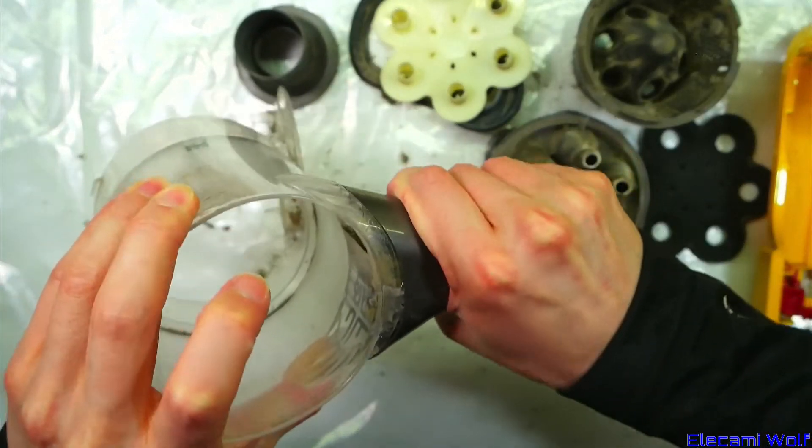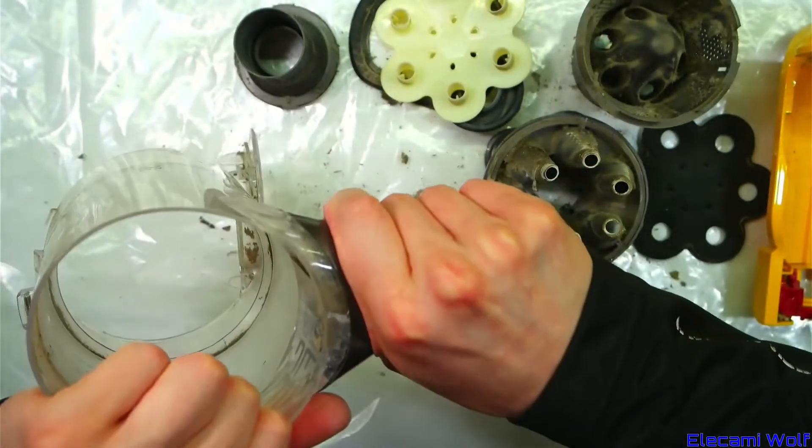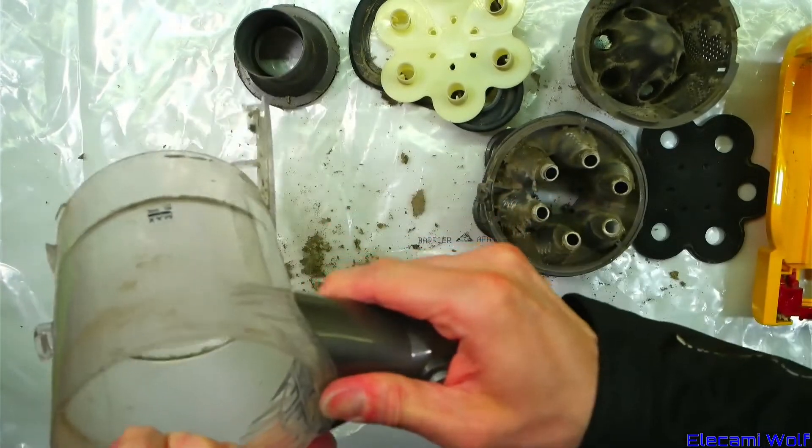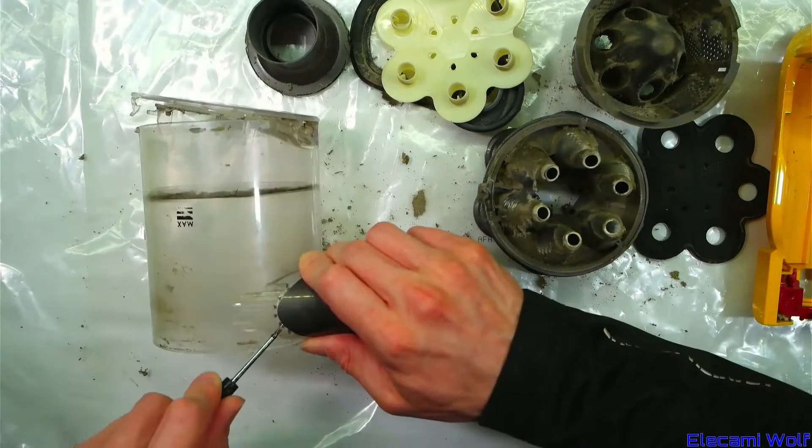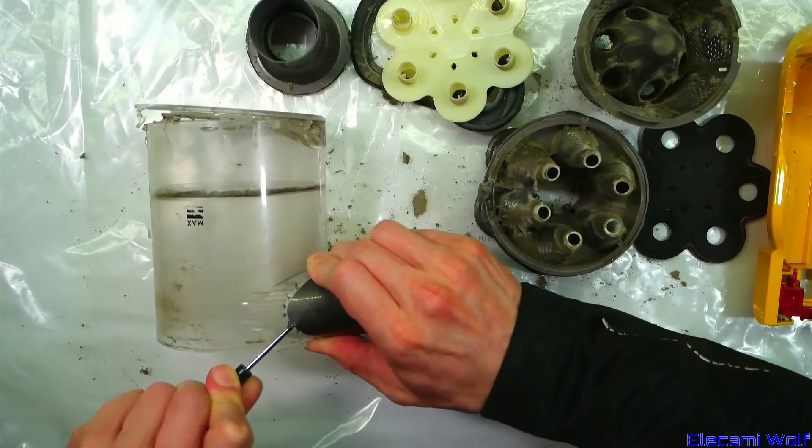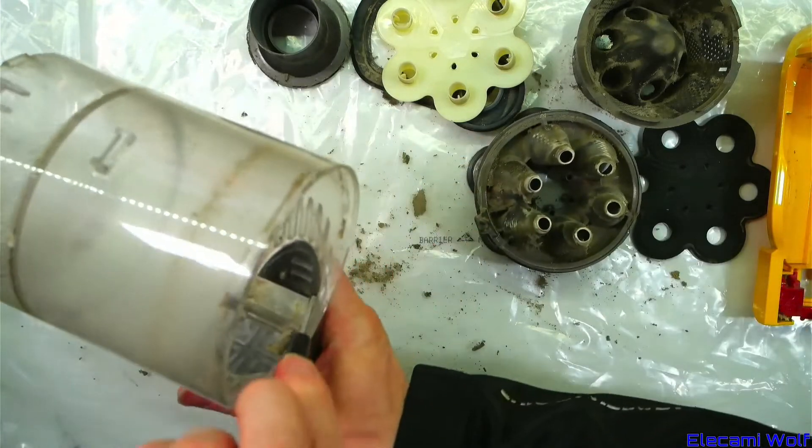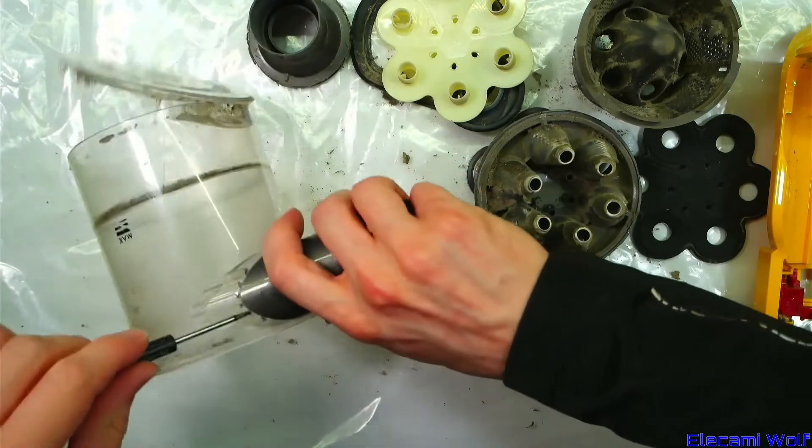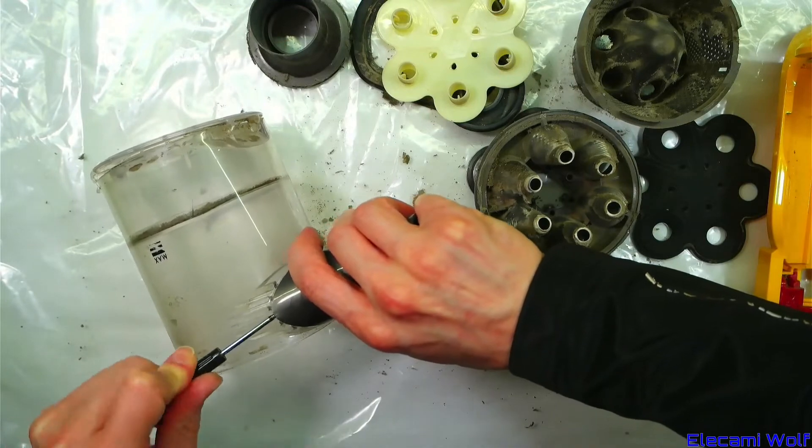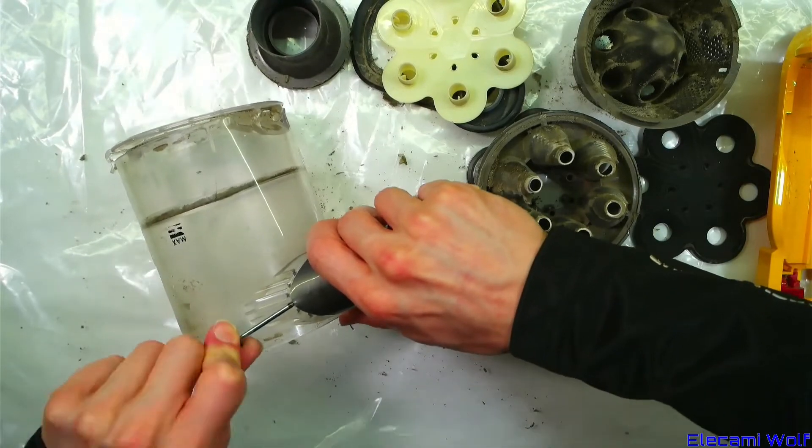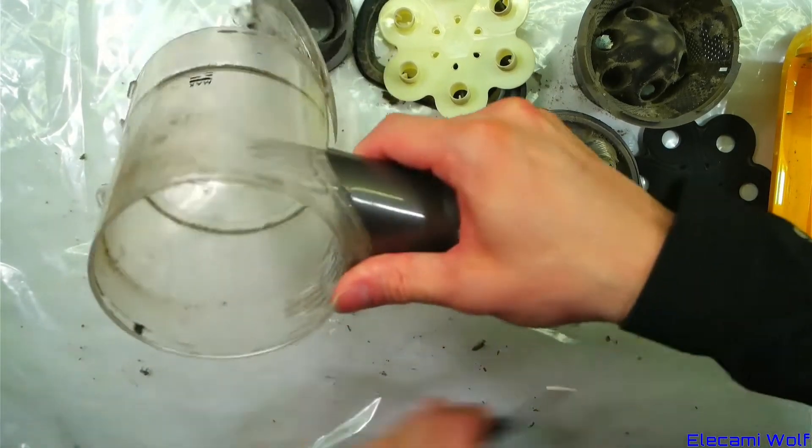So supposedly now that comes off. But I'm not so sure about that. I don't really want to break it. I think there's ridges there which make it look like it's being clipped in from this side, but it's not very willing to unclip. There we go.